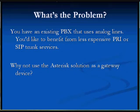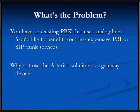The problem we want to solve is we have an older PBX with a bunch of analog lines, and we want to get less expensive PRI or SIP trunking to give our company the ability to use the more competitive price structure that these things offer. The potential solution here is to use an Asterisk solution as a gateway device instead of a voice-over-IP phone system.